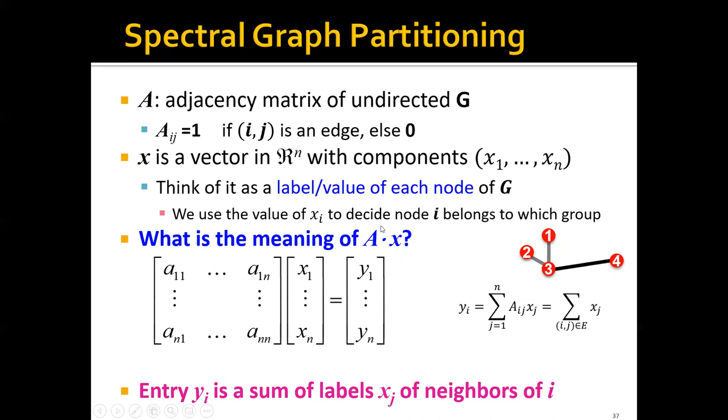and we can use the value of xi to decide which group node i belongs to. So if xi equals positive 1, then it belongs to group A, and if xi equals minus 1, then it belongs to group B.